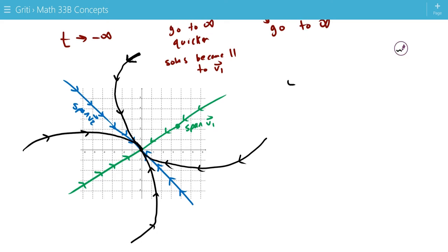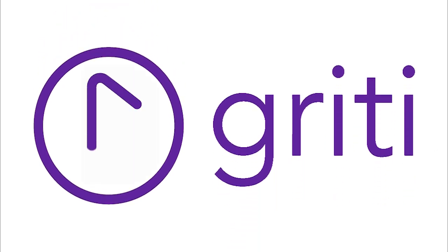This has four stable half lines, and we call this a nodal sink equilibrium.